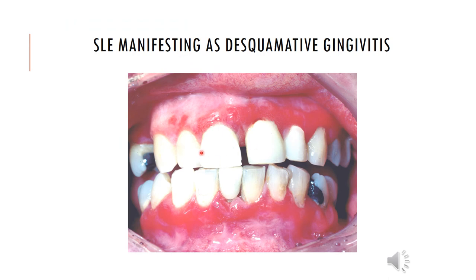This is a case of SLE manifesting as desquamative gingivitis — extremely erythematous. Looking at this, you cannot call it simple gingivitis or periodontitis; the level of erythema of the gingiva is completely unexplained. This is called desquamative gingivitis, which is a clinical finding and not a diagnosis on its own. Both SLE and lichen planus can look like desquamative gingivitis; to differentiate, a biopsy is required, with the best spot being near the pocket area.